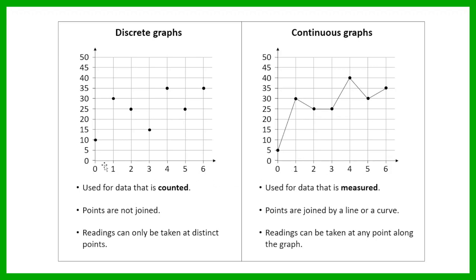I can't take a reading at 0.5 on a discrete graph because there's nothing there to take a reading from. So that's a big difference: on discrete graphs you can only take readings at specific points, whereas on continuous graphs you can take readings anywhere.